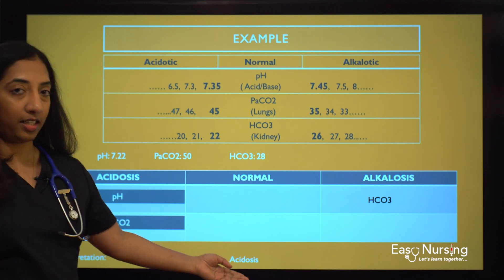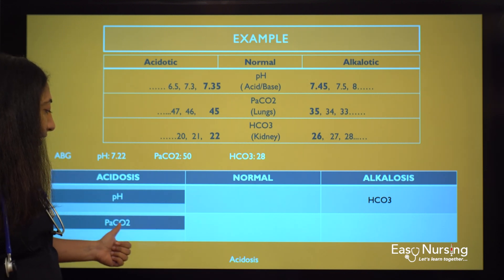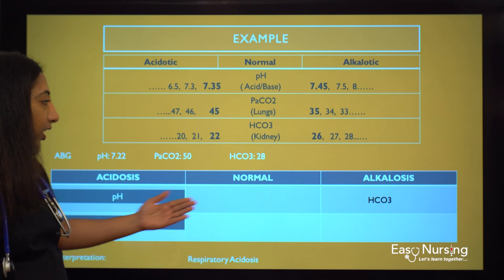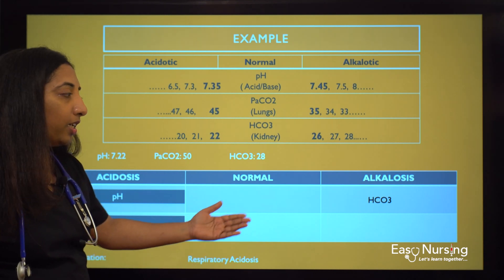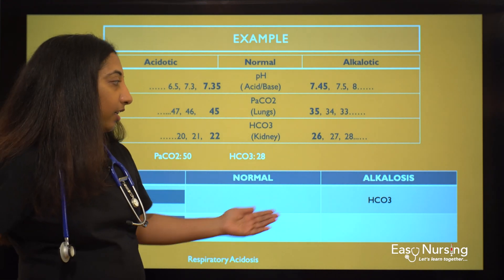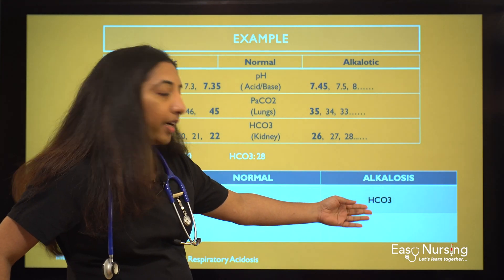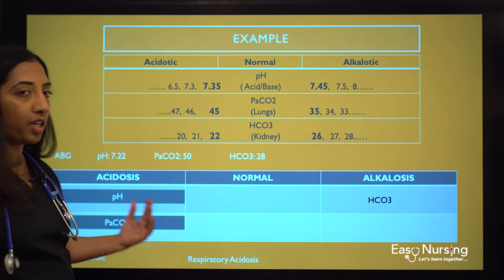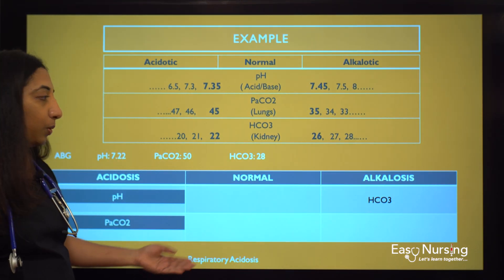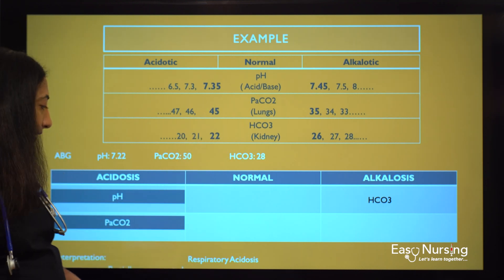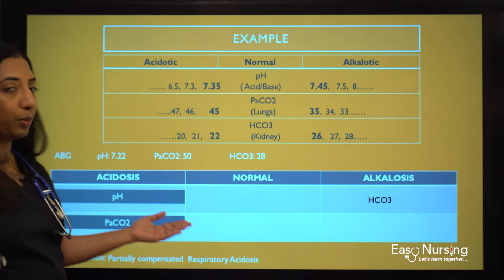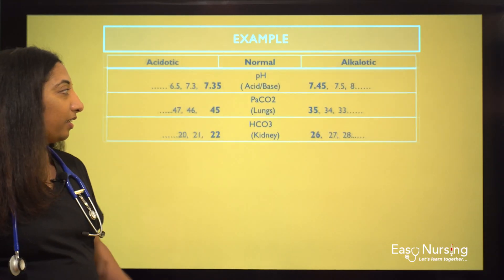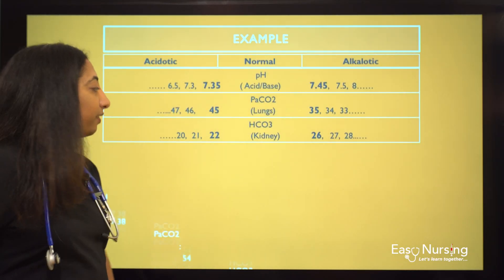How do we interpret it? It is respiratory acidosis, since both pH and PaCO2 are under acidosis and PaCO2 is related to the lungs. Is it partially or fully compensated? Bicarb is abnormal, which means it is trying to bring that abnormal pH back to normal, but the pH is still abnormal — so it is partially compensated.